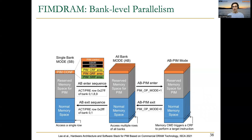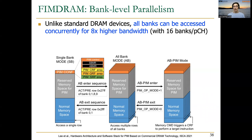Remember that the key for FIMDRAM or HBM PIM to improve performance for memory-bound workloads is that we can exploit bank-level parallelism. Unlike standard DRAM devices, all banks can be accessed concurrently, and this can result in eight times higher bandwidth when we have 16 banks per pseudo-channel. In order to go to PIM mode, there is a sequence of commands to transition from the conventional single-bank mode.